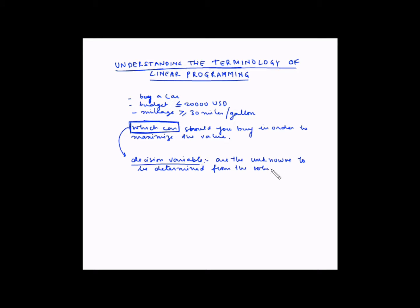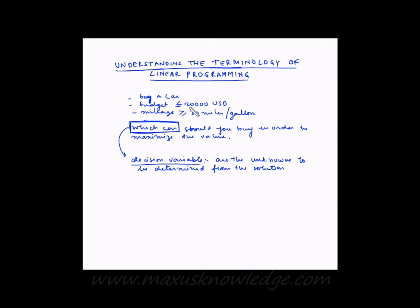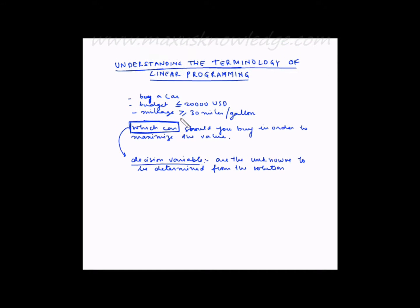Going back to the example, our budget is $20,000 US dollars — so we can spend $16,000 or $17,000 but not $21,000. The mileage has to be more than 30 miles per gallon, so mileage can be 31 or 32 but cannot be 28 or 29. These two factors represent the constraints.